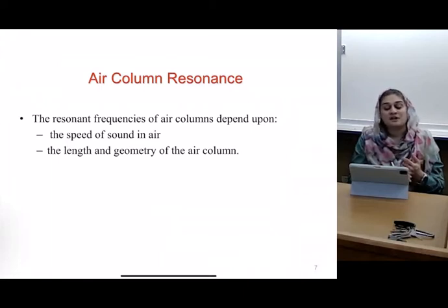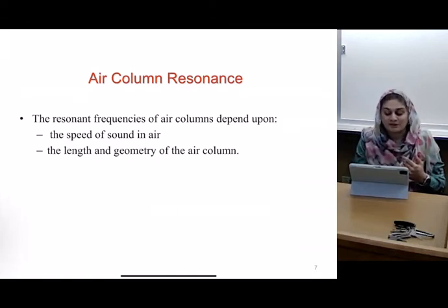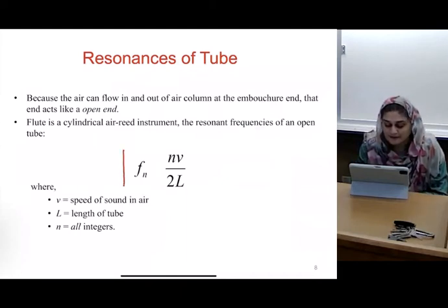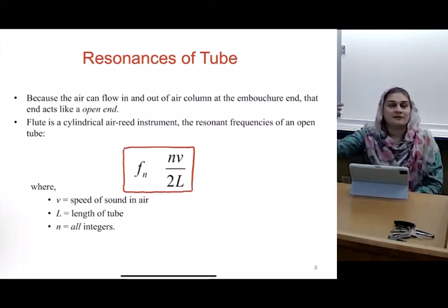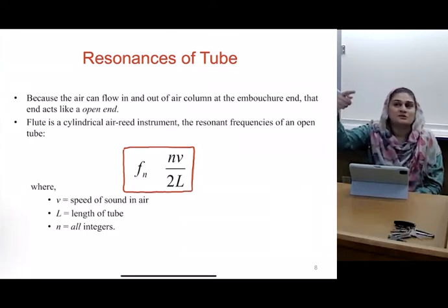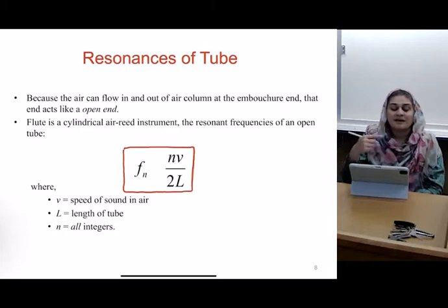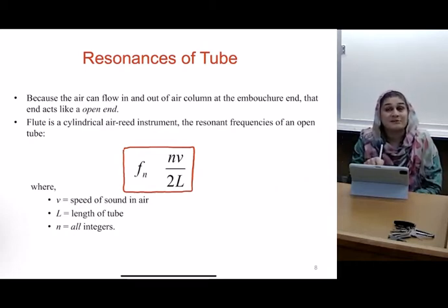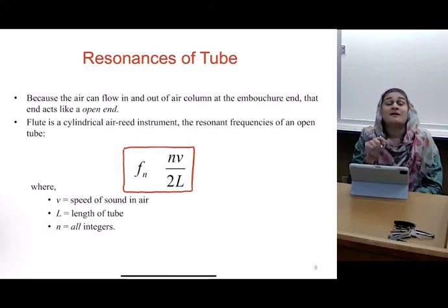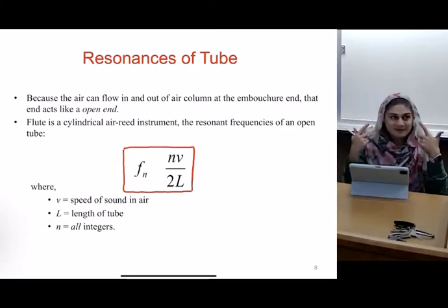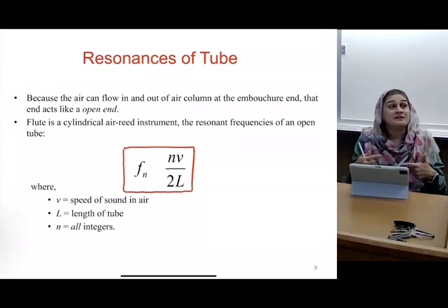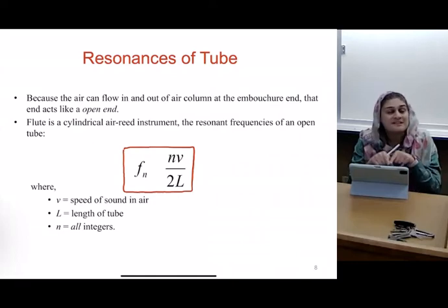The resonant frequencies of the air column depend on the speed of sound in the air, and the length and geometry of the air column. The formula is exactly the same as before: f_n = nV/2L, where n is the particular harmonic (1, 2, 3...), V is the speed of sound, and L is the length of the tube. This is the same formula we used for standing waves in a string. What's fascinating is that even when standing waves are 3D and formed in air, the physics is exactly the same, though the sound is very different. The nodes and antinodes are pressure nodes and antinodes.